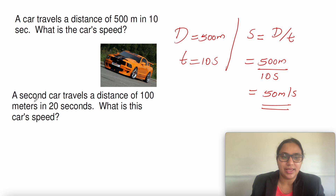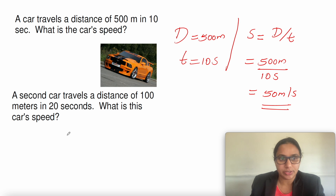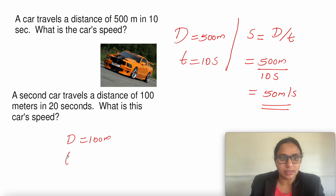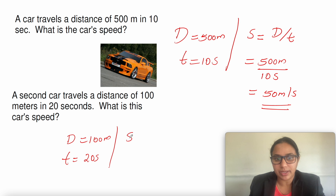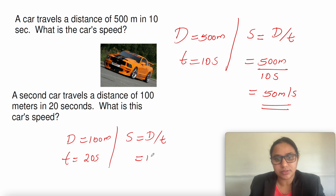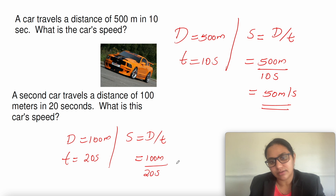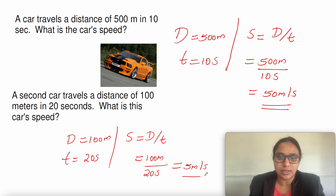Another example: a second car travels a distance of 100 meters in 20 seconds. What is this car's speed? Distance is 100 meters and time is 20 seconds. Speed equals distance divided by time taken: 100 meters divided by 20 seconds gives 5 meters per second.